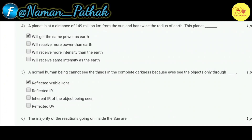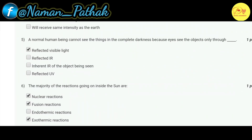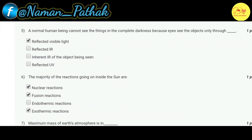Our fourth question: a planet is at a distance of 149 million kilometers from the sun and has twice the radius of Earth. The correct option is A — this planet will get the same power as Earth. Our fifth question: a normal human being cannot see an object in complete darkness because we see objects only through reflected visible light. The correct option is A.